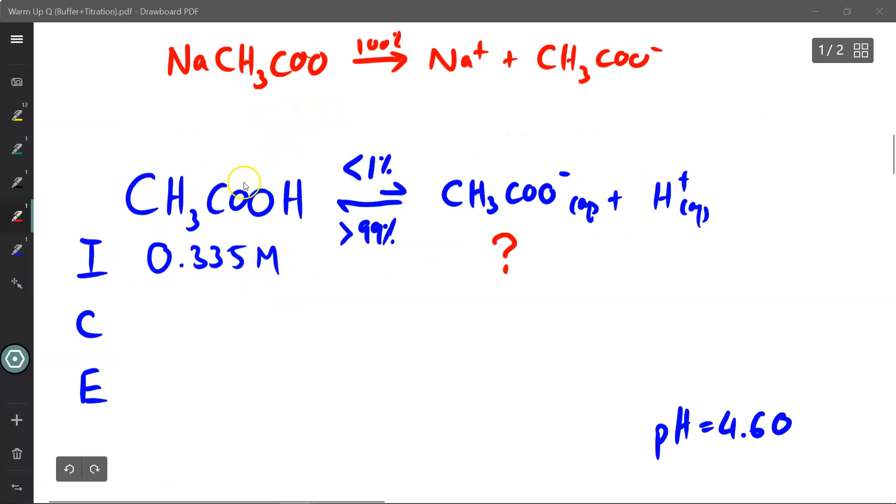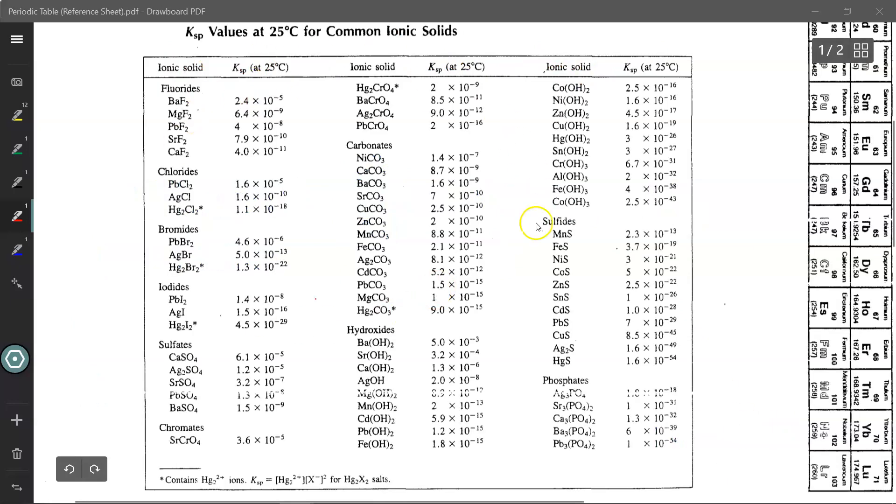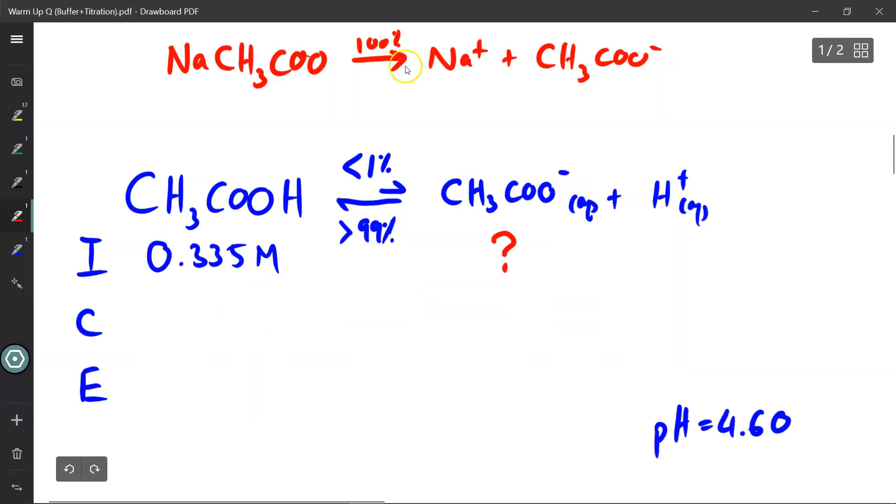Alright, so here's the game plan. I've got some 0.335 molar acetic acid, and then I've got some sodium acetate, and the question is how much sodium acetate can I dump into the solution so that my final pH is going to be 4.60. So looking at sodium acetate, I don't see it anywhere on my KSP chart, so I can assume that it dissolves 100%, releasing sodium ions and acetate ions.